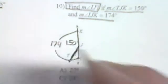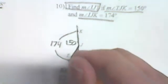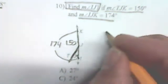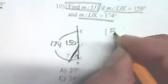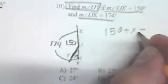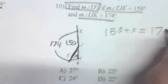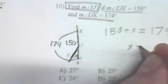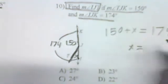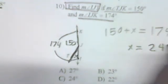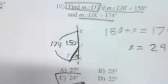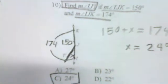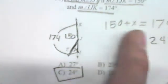Label the unknown angle as x. By the angle addition postulate, 150 plus x equals 174. Subtracting 150 from both sides, x equals 24 degrees. So the answer is C.